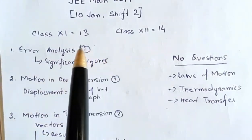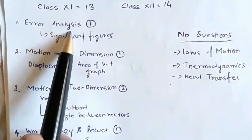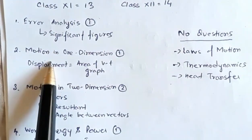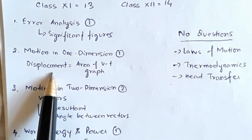From class 11, the topics were: from error analysis there was one question on significant figures. From the chapter motion in one dimension there was one question where you're asked to calculate the displacement from the area of v-t graph.